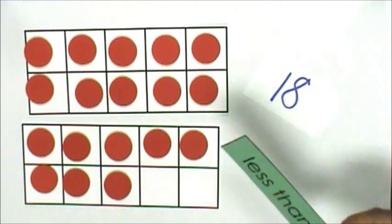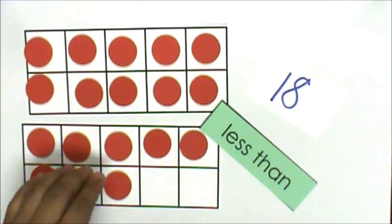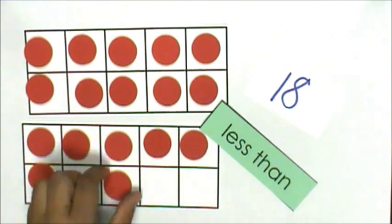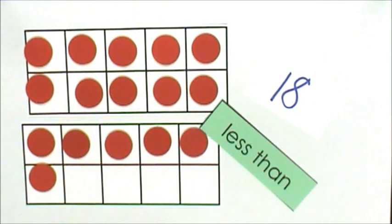Let's turn over a comparison card. Less than. Then, if I take two counters away, I have ten, fifteen, sixteen. Sixteen is less than eighteen.